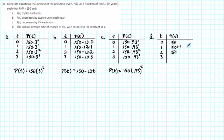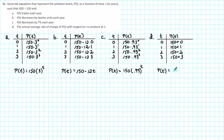After two years the pollution level will be 150 plus 1 plus 1, which is 150 plus 2. After three years it will be 150 plus 1 plus 1 plus 1, which is 150 plus 3. For time equals 0 we could write 150 plus 0. So what we notice is that each time the pollution level is 150 plus the number of years that have gone by. Our formula is simply p of t equals 150 plus t.